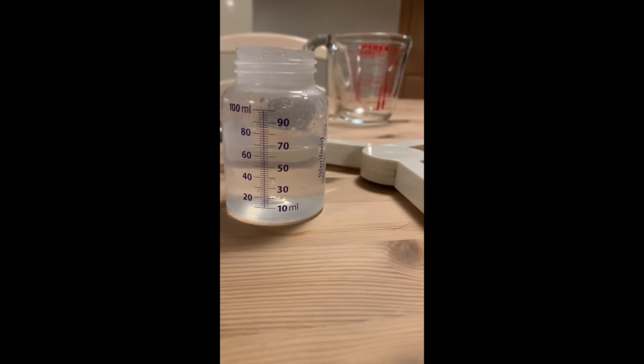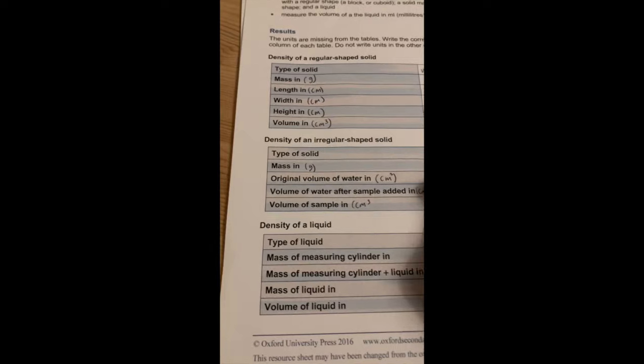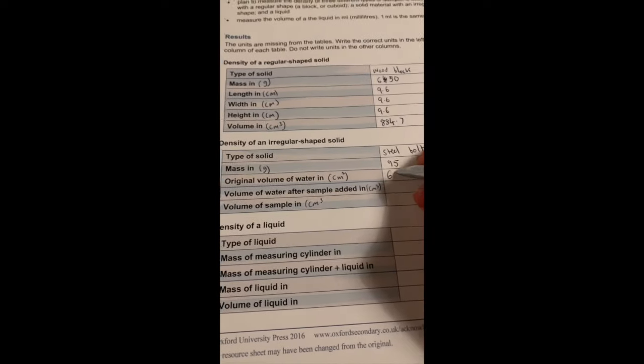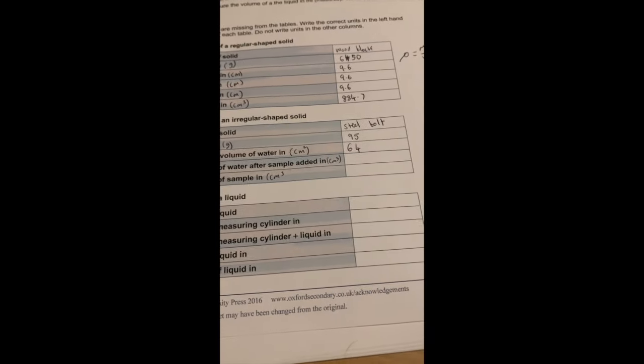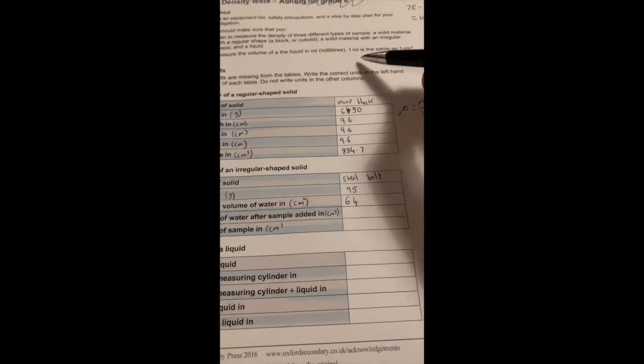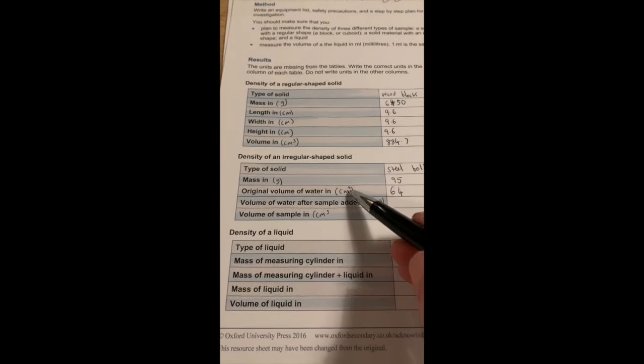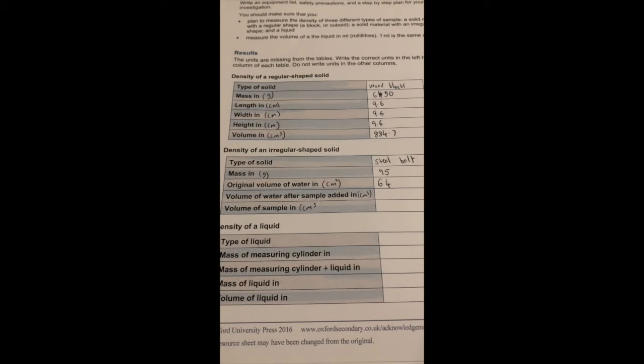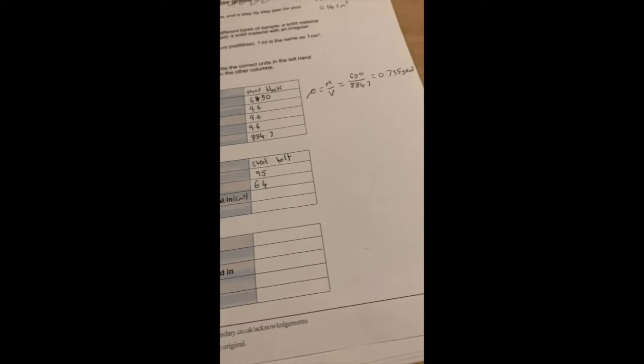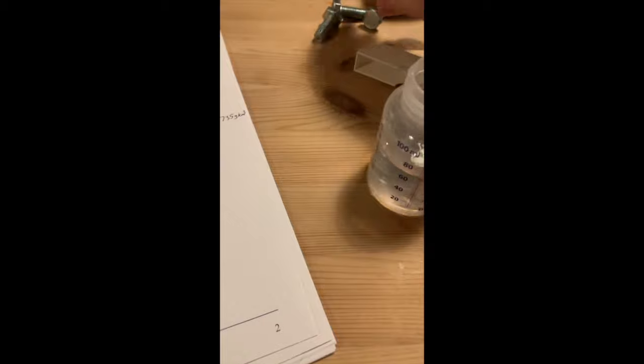And what water's in here? 64 milliliters. So I've got 64 milliliters. I'm just going to write 64 in here. And that's in milliliters on here, but actually, as it says at the top of the worksheet, one milliliter is the same as one centimeter cubed. So I've put my units centimeters cubed. I'm just working that. And so, volume of water after the sample added, so I'm going to add my sample, which is these four bolts.